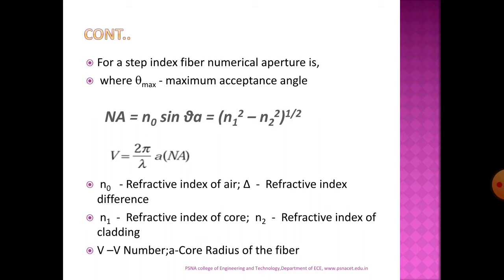Numerical aperture equals n₀ sinθₐ, which equals √(n₁² − n₂²), where n₀ is the refractive index of air, n₁ is the refractive index of the core, n₂ is the refractive index of the cladding, and θₐ is the acceptance angle. The normalized frequency V-number relates to numerical aperture as: V = (2π/λ) × a × NA, where λ is the wavelength of light and a is the core radius of the fiber.